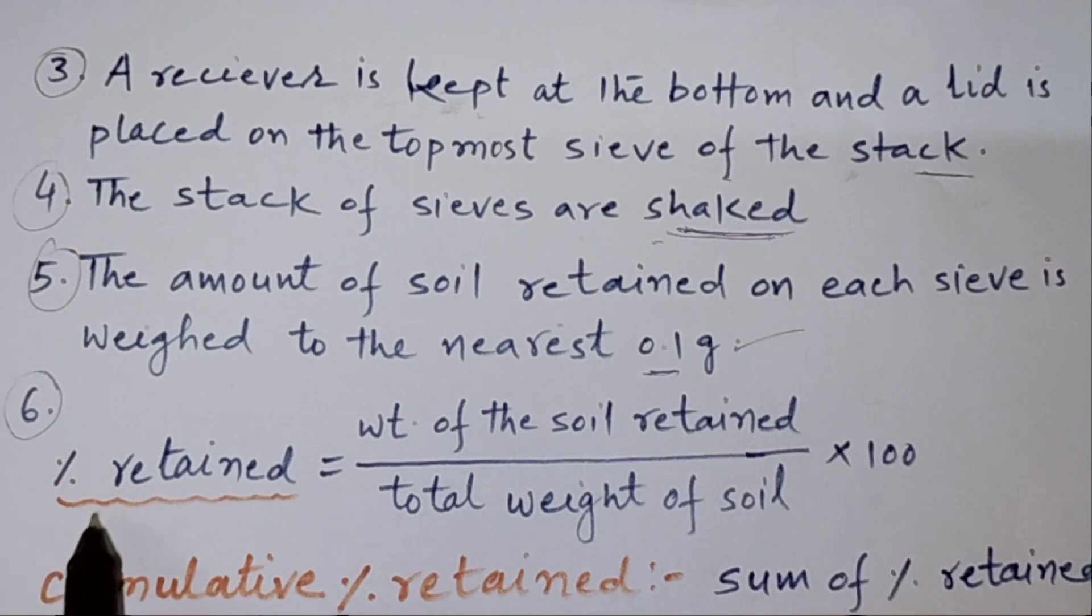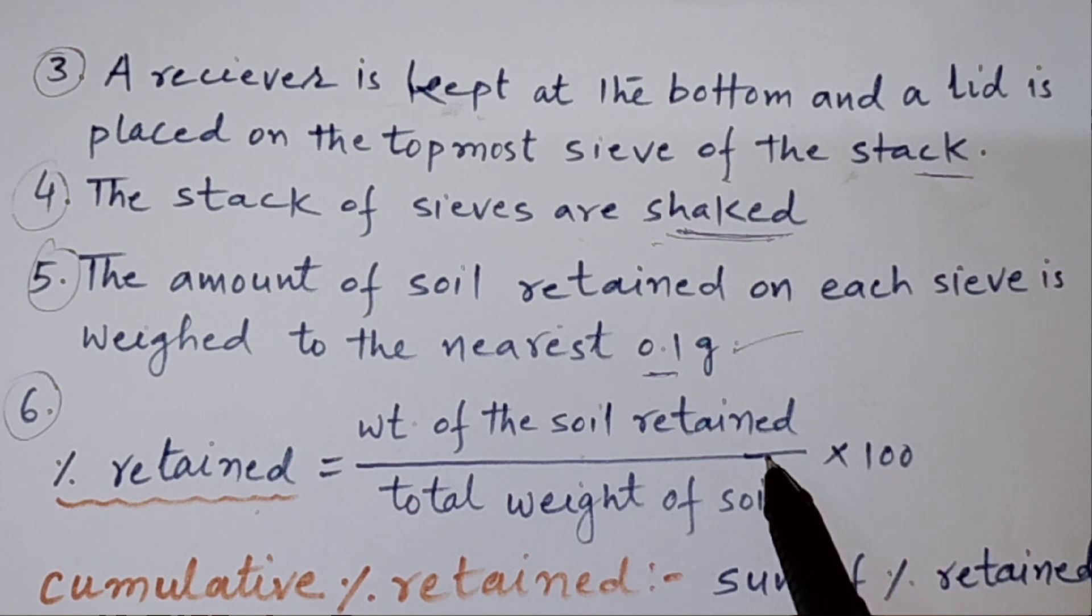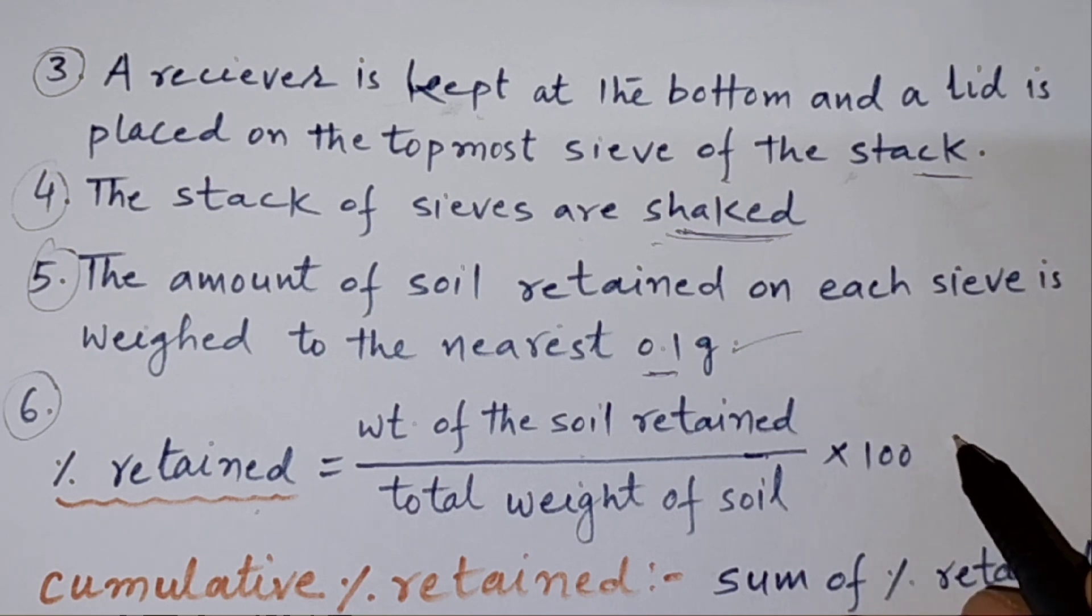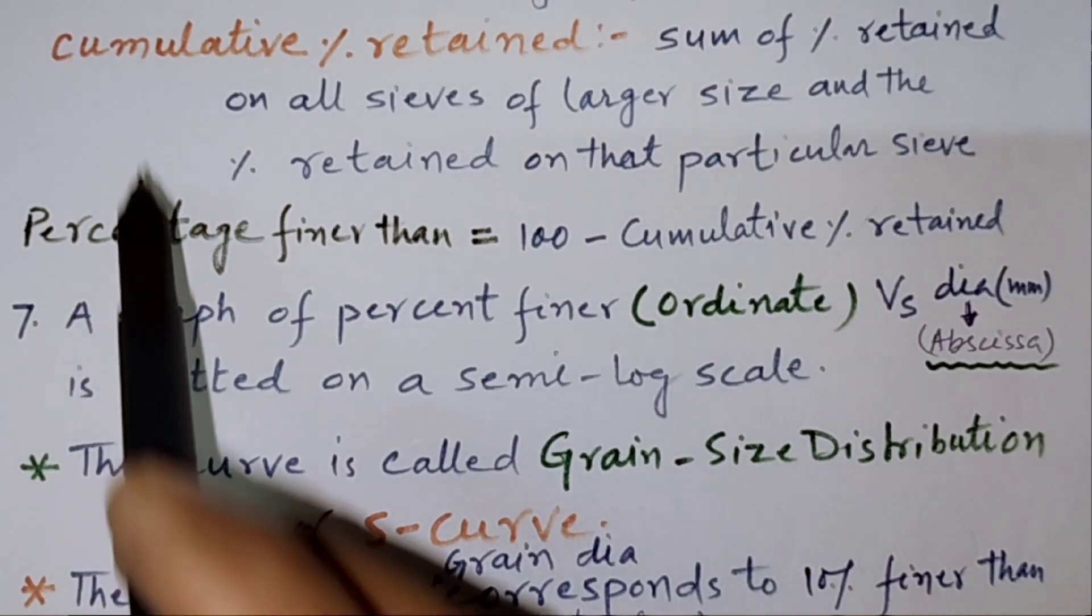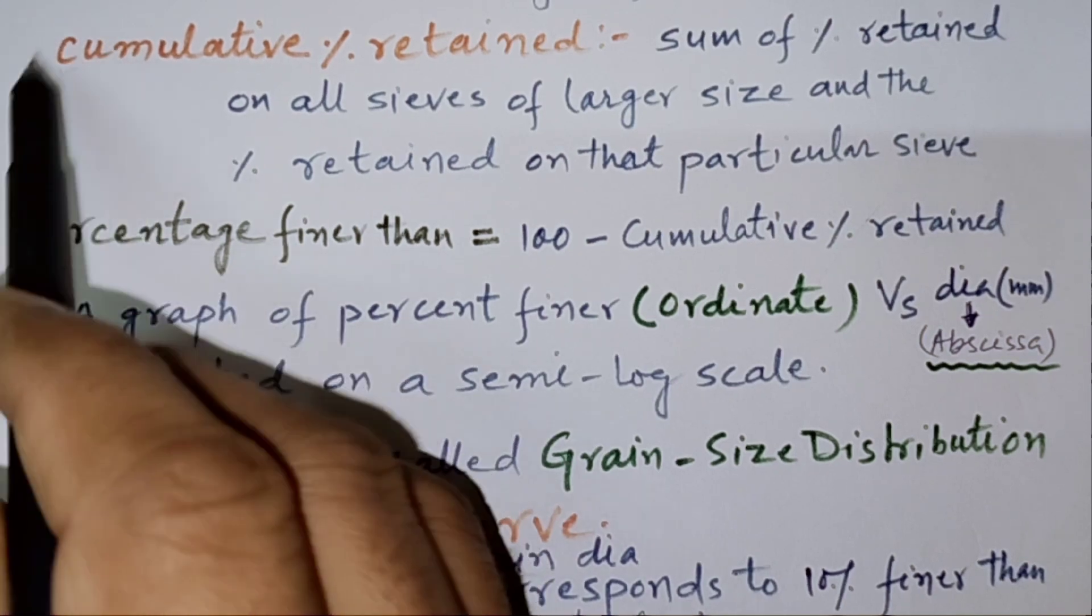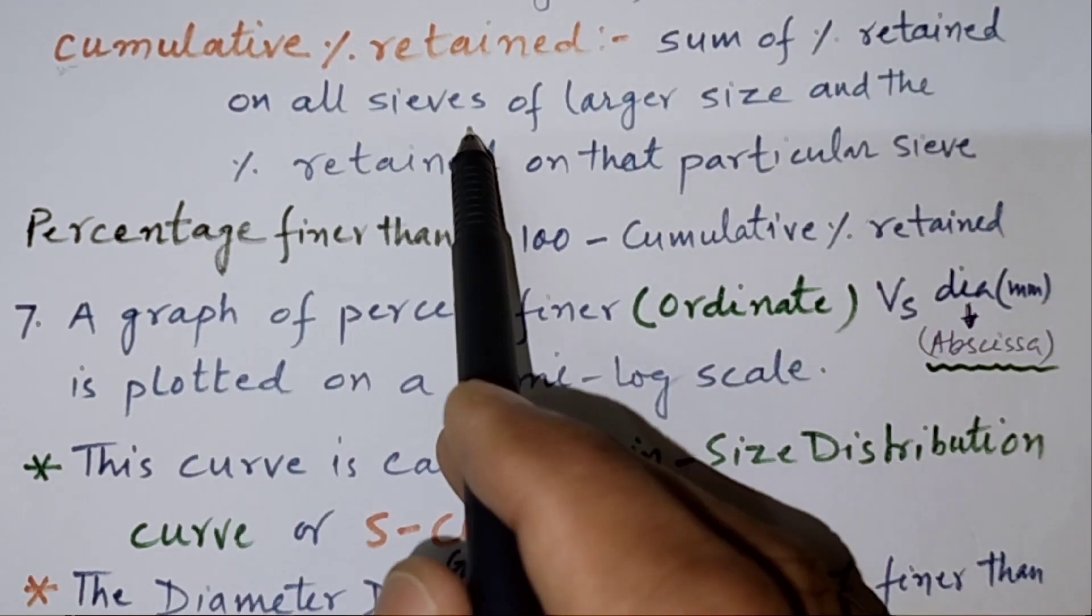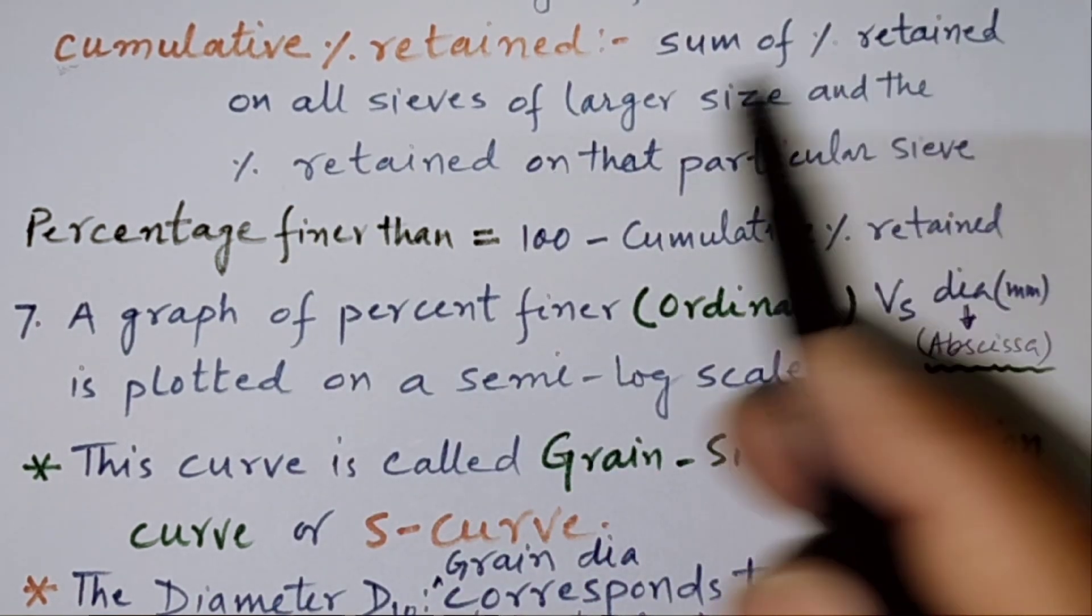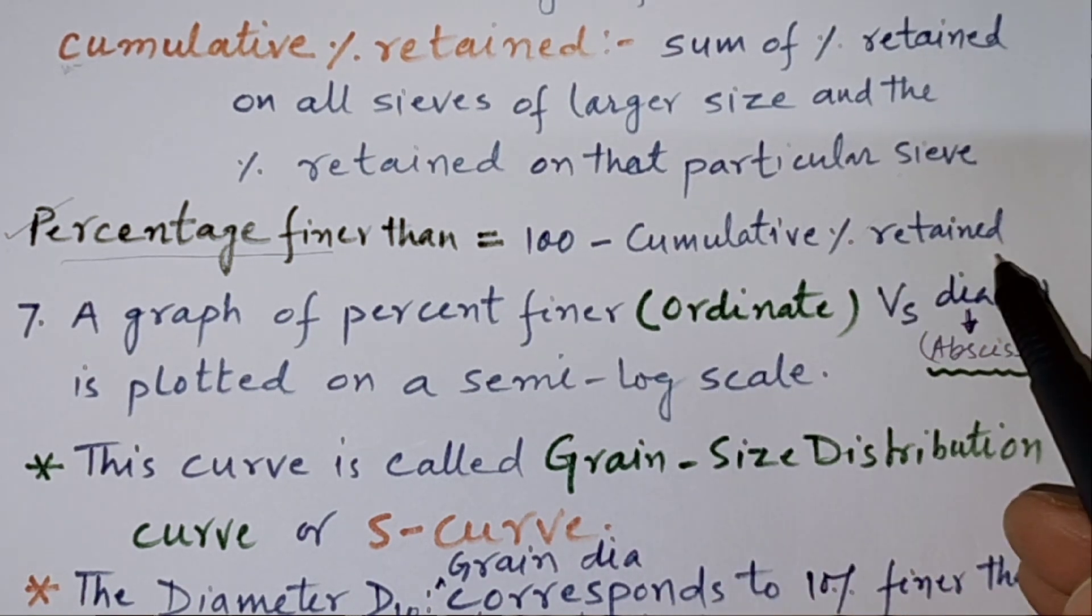Now, we will calculate percentage retained. Percentage retained will be weight of the soil retained on a particular sieve, divided by total weight of the soil, which we have taken approximately 500 gram, multiplied by 100%. After calculating percentage retained, we will calculate cumulative percentage retained. That cumulative percentage retained is sum of the percentage retained on all sieves of larger size, and the percentage retained on that particular sieve. Then, percent finer, very important, percent finer is 100 minus cumulative percentage retained.